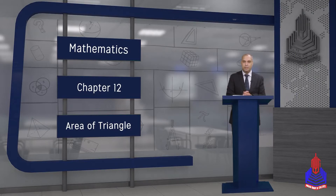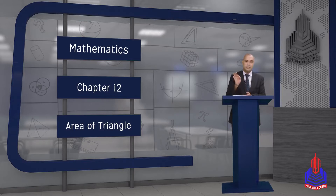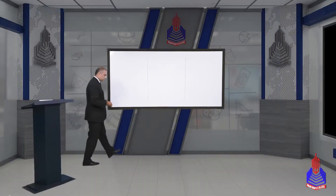Bismillahirrahmanirrahim, assalamu alaikum. I am Khwaja Mohsin Inaam. Students, our topic is area of triangle. So far we have discussed two cases for finding the area of a triangle. Case number one was when two sides and included angle is given. Case number two was when two angles and a side is given.